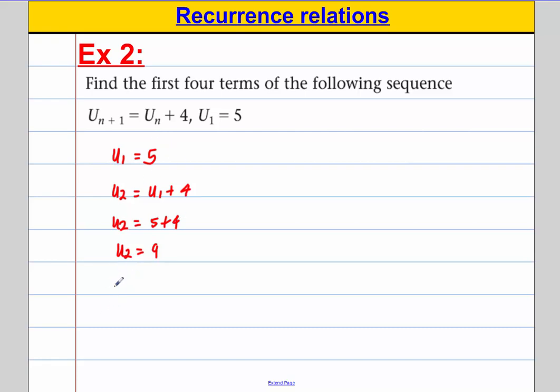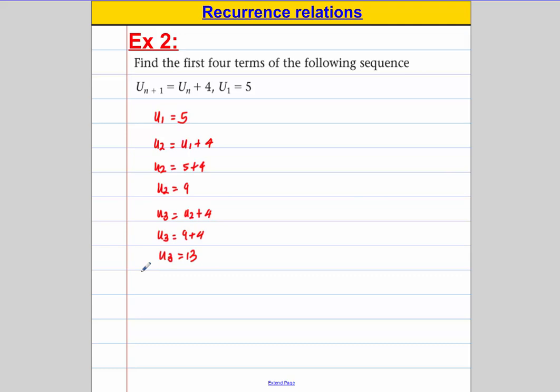And then we're going to say that u3 must be equal to the one before, add 4. So u2, add 4. u3 is equal to 9, add 4. u3 is equal to 13. And lastly we're going to say u4 is equal to u3, add 4. u4 is equal to 13, add 4. So u4 is equal to 17.